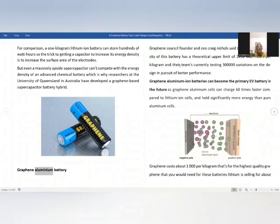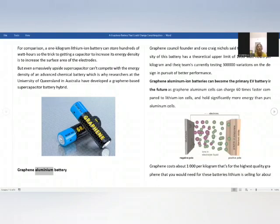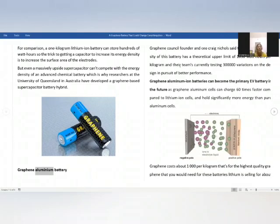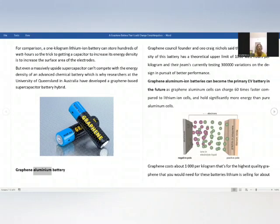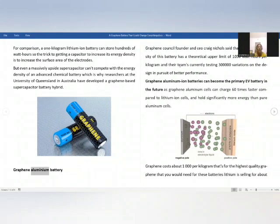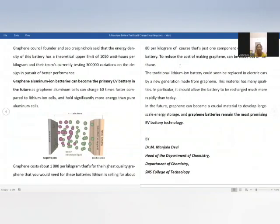For comparison, a one kilogram lithium battery can store hundreds of watt hours. So the trick to getting a capacitor to increase in energy density is to increase the surface area of the electrodes. But even a massively upscaled supercapacitor can't compete with the energy density of an advanced chemical battery, which is why researchers at the University of Finland in Australia have developed a graphene-based supercapacitor battery hybrid.